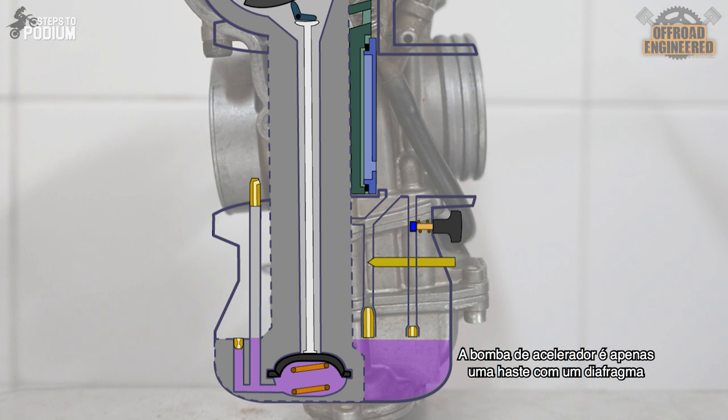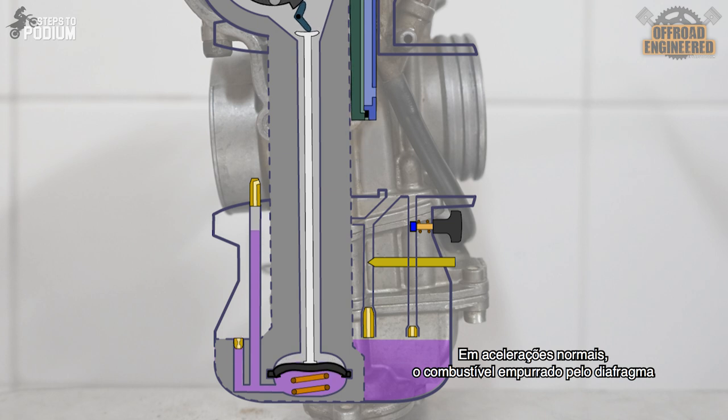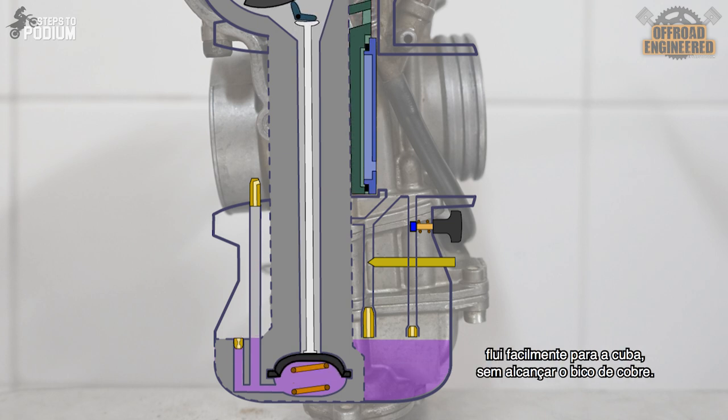The accelerator pump is basically a rod with a diaphragm and a spring at the end, filled with fuel. It is connected to two canals: a longer but less restricted canal which is connected to a small brass nozzle on the main air passage, and another shorter and more restricted canal connected to the float bowl. On normal accelerations, the fuel pushed by the diaphragm will easily flow to the float bowl without reaching the brass nozzle.